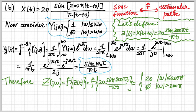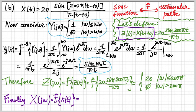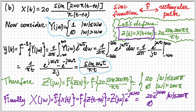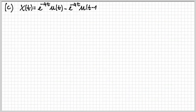Now I know the Fourier transform of z(t). Since x(t) is a shifted version of z(t) — specifically x(t) = z(t - 10) — its Fourier transform is Z(jω)·e^{-jω·10}, where 10 is the amount of the time shift. Therefore X(jω) = 20·e^{-j10ω} between -200π and 200π, and zero elsewhere.